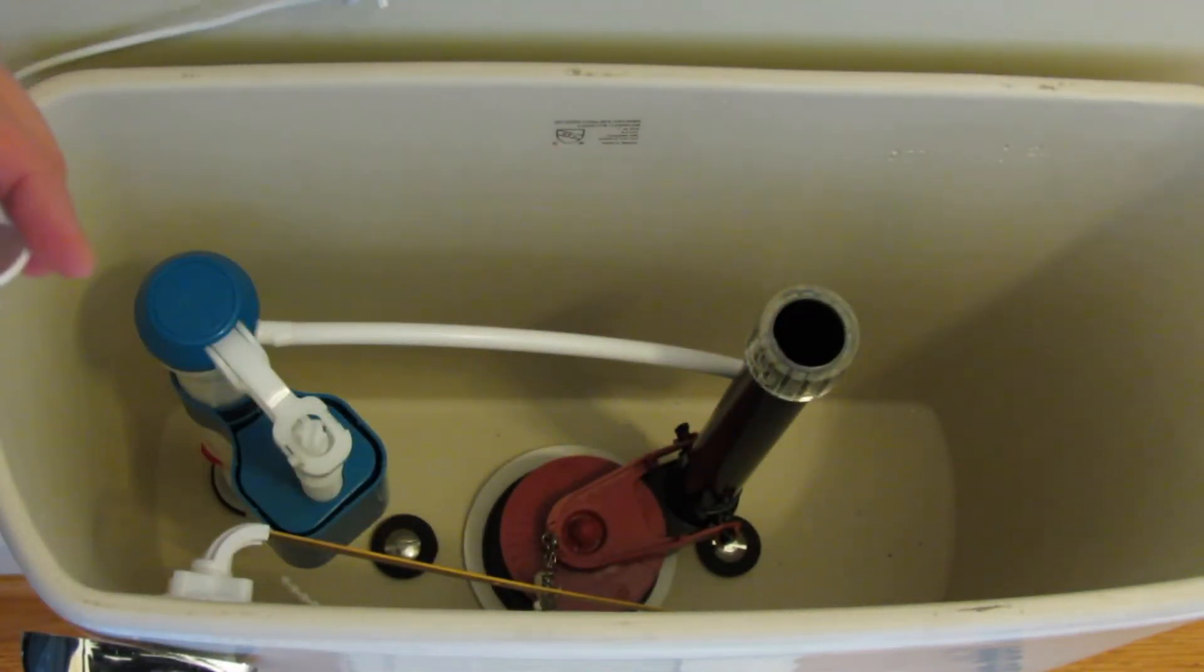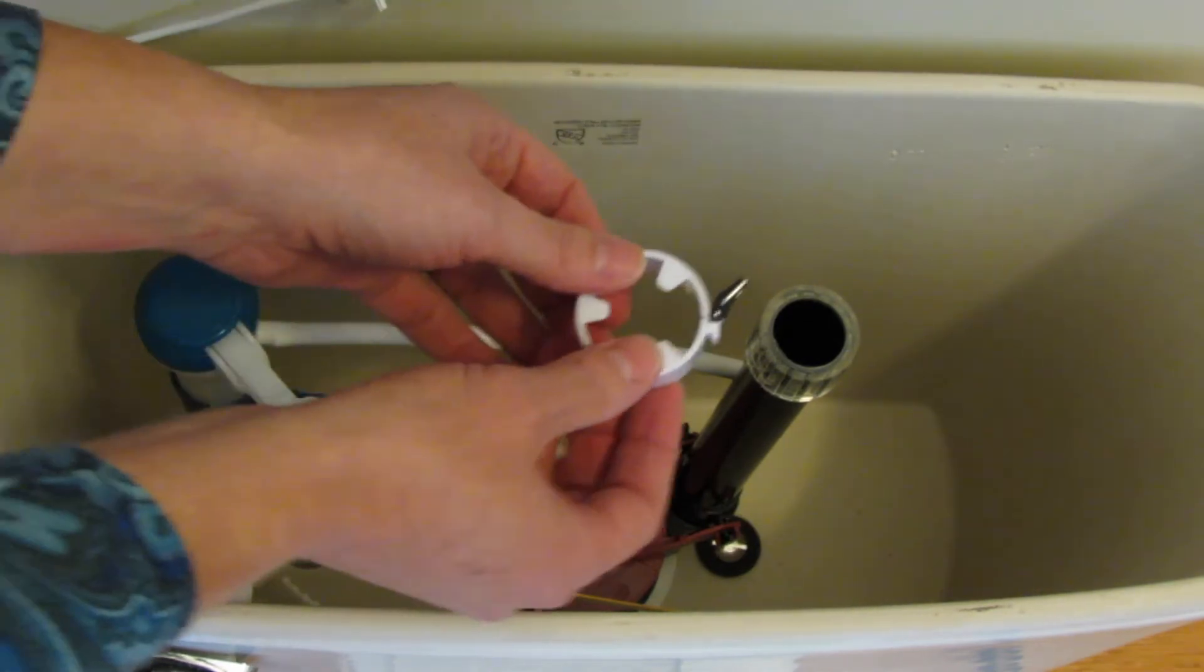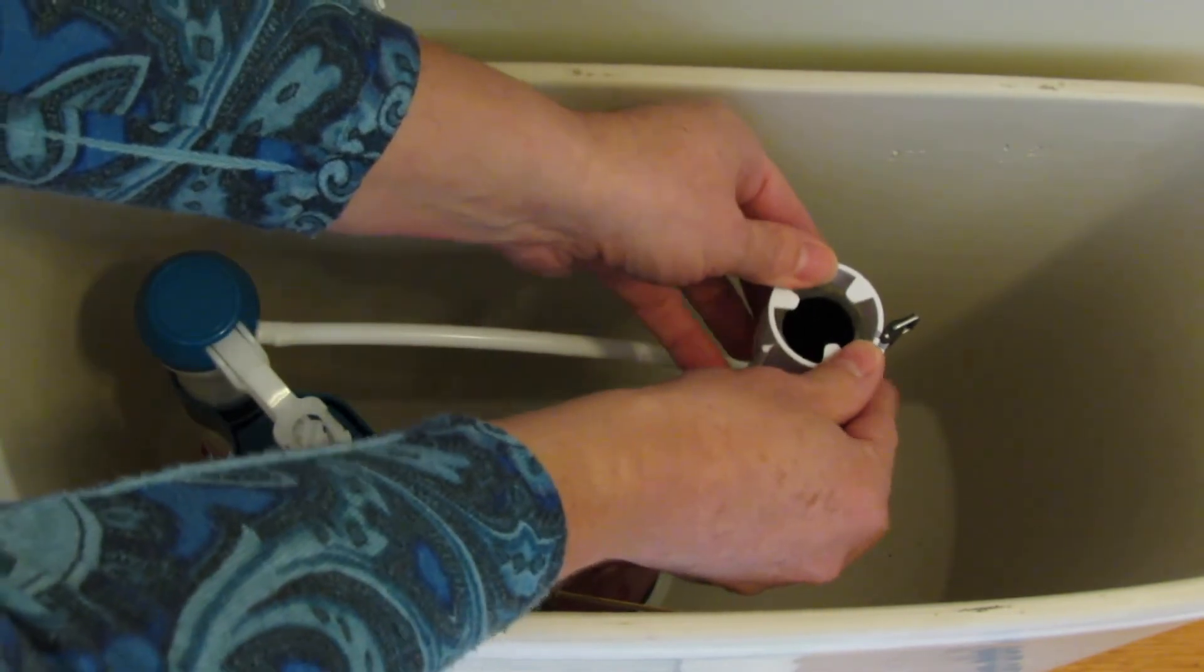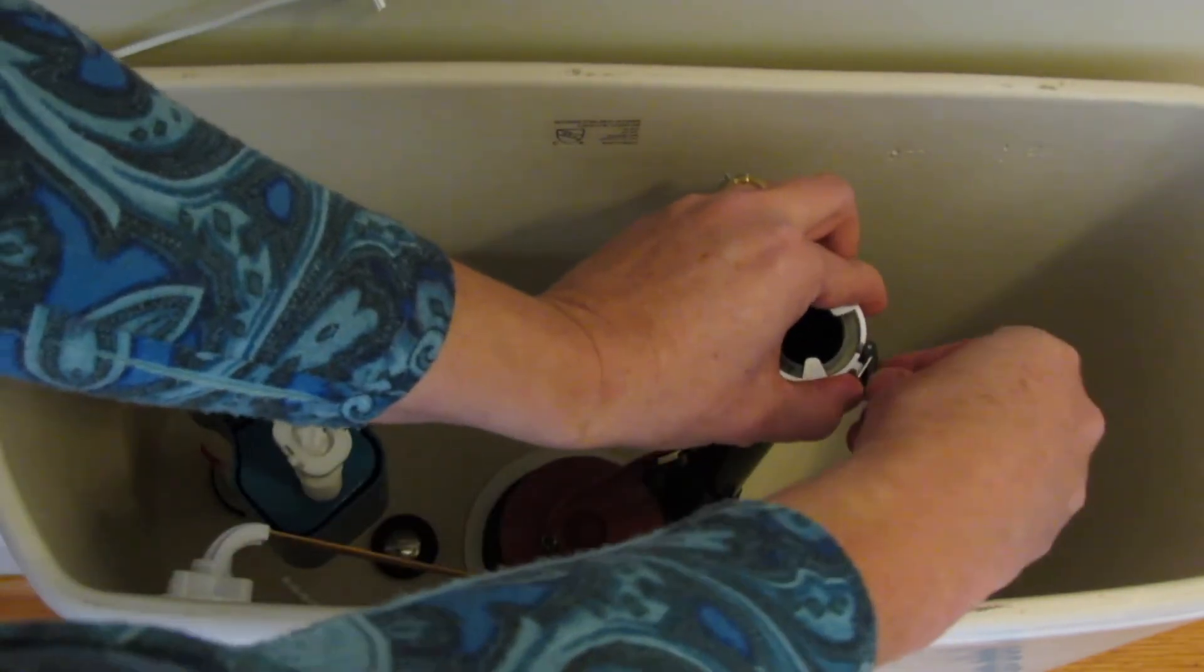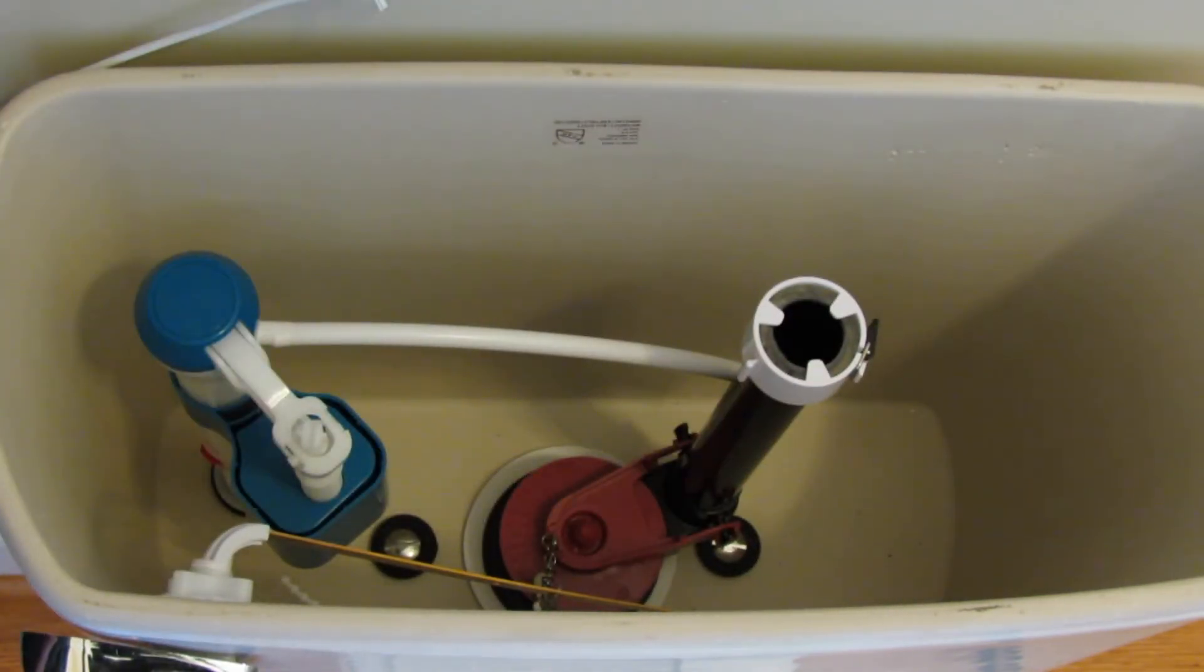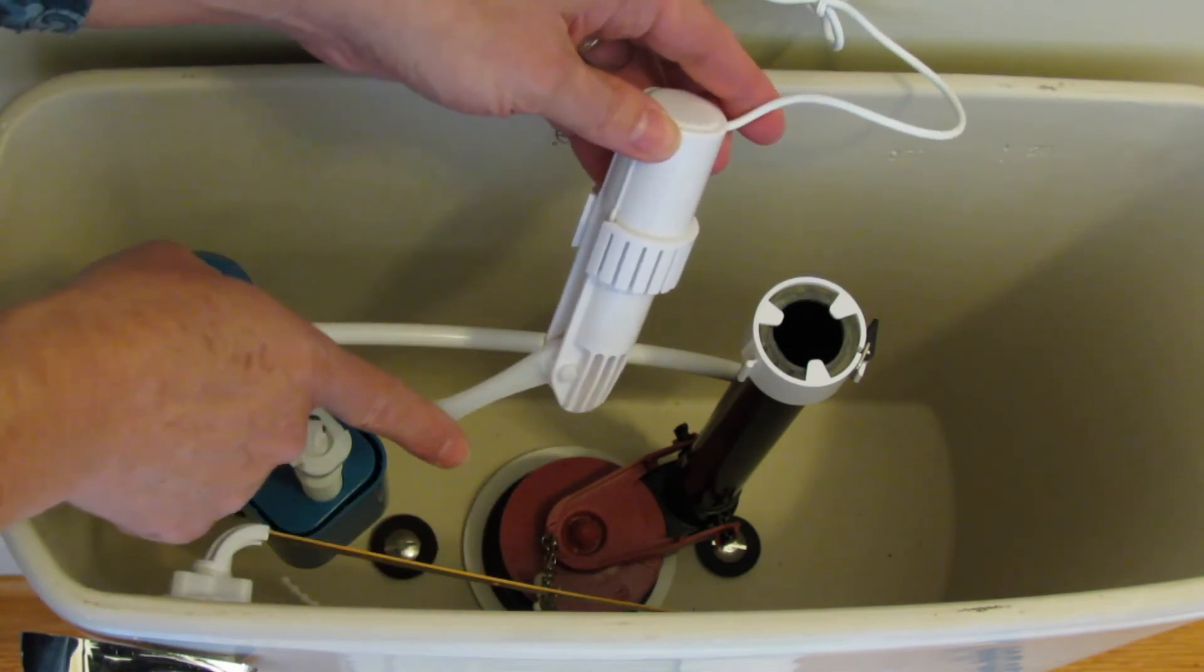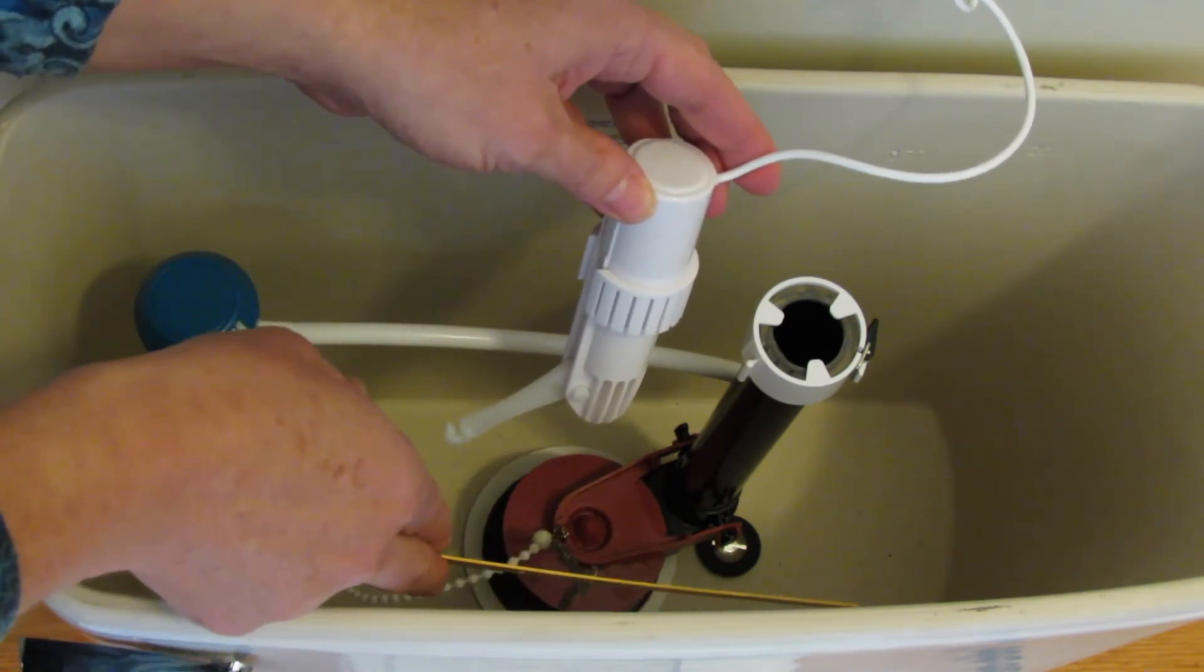Now, let's place our snap clip over the top of the bowl fill tube. We want to have the tab over the flapper valve.